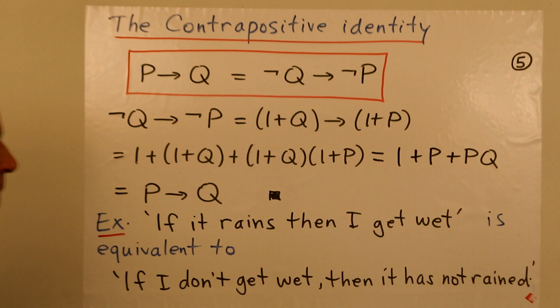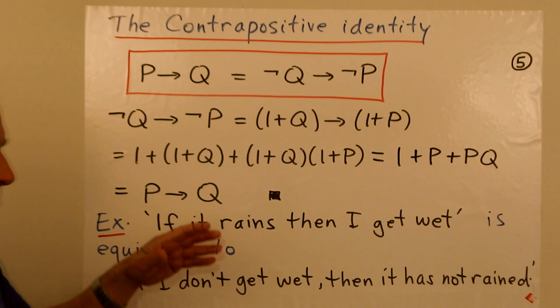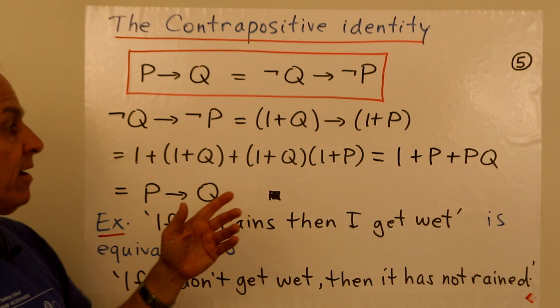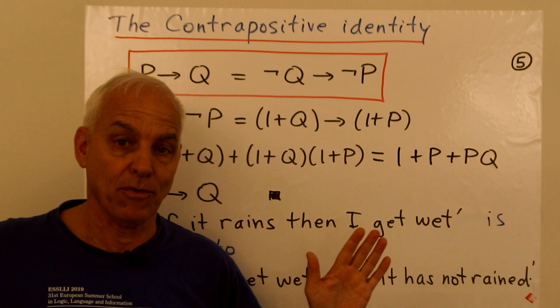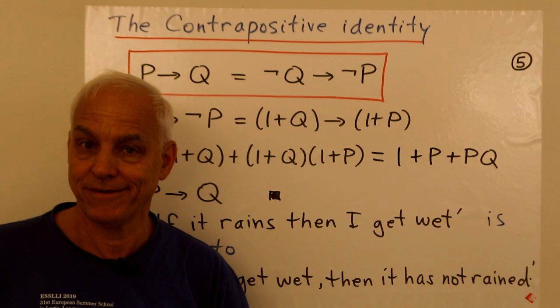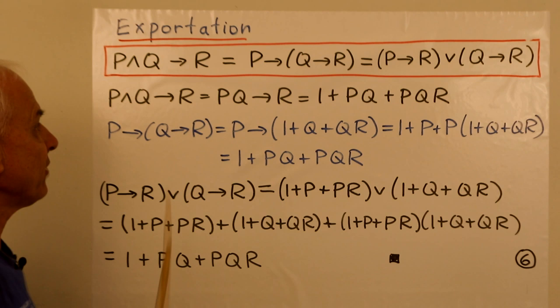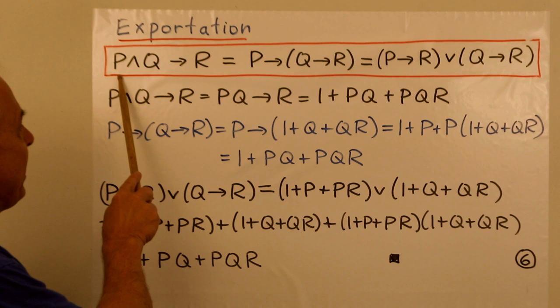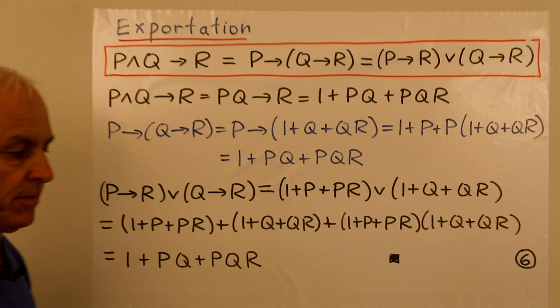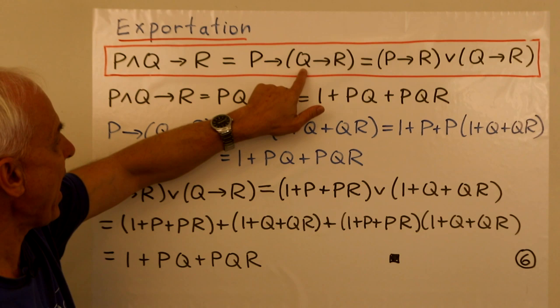The contrapositive identity is very important in mathematics — sometimes it's more convenient to prove the contrapositive version of a statement. Now here's another identity we've seen before, which I want to extend: the exportation identity. We have that p∧q→r equals p→(q→r). This was a way to prove an implication by adding q to our list of premises. But I'm asserting these two are also equal to (p→r)∨(q→r).